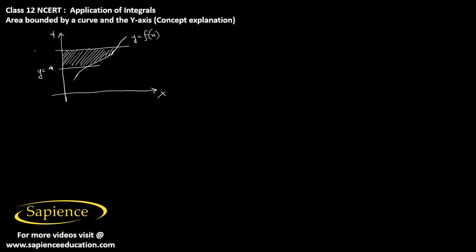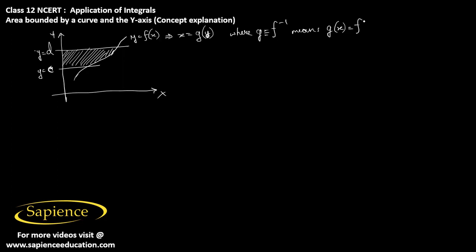Suppose y equals c and y equals d — these are the two boundary lines. First, we have to express x in terms of y. If y equals f of x, then x can also be written in terms of y as g of y, where g is the inverse function of f. So g of x should be equal to f inverse of x.